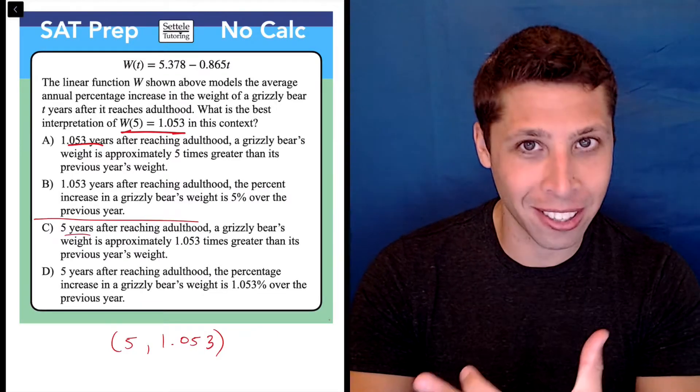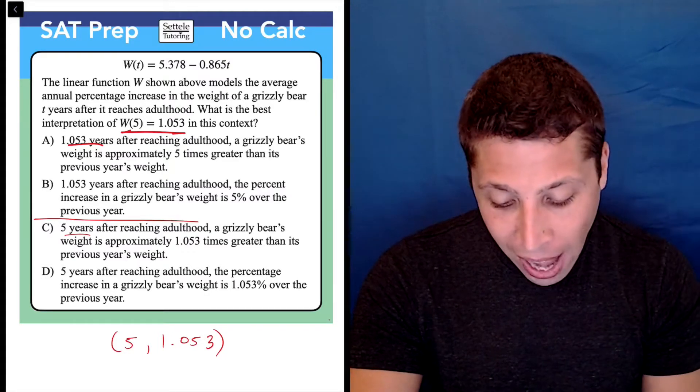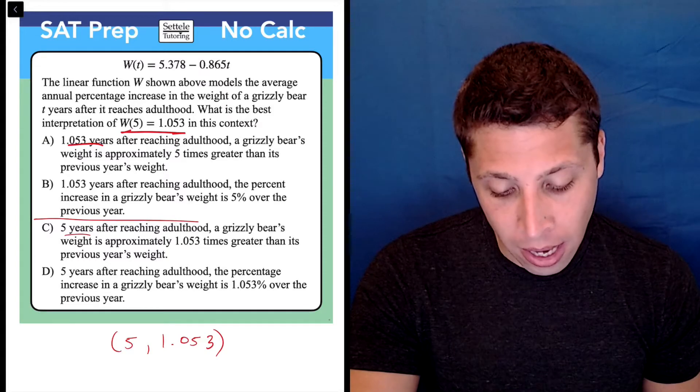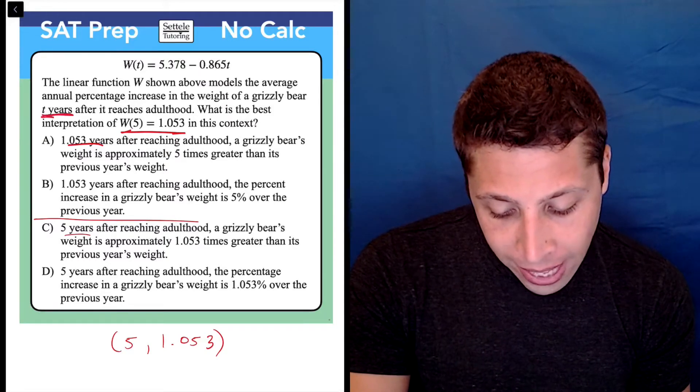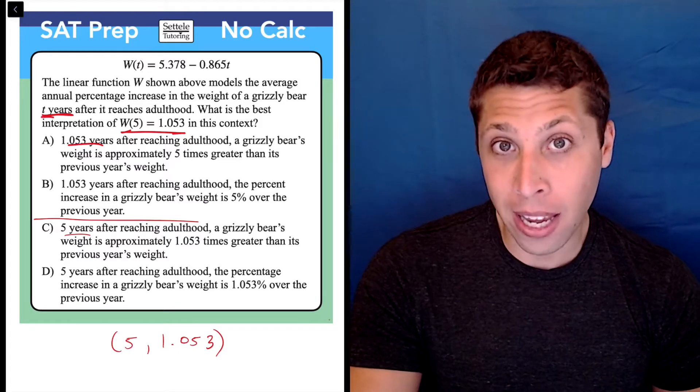Just go to the passage, go to the line of the passage, go to the question and see what the 5 or the 1.053 are supposed to be. Well, they tell us that the X coordinate, the T, is going to be the years.